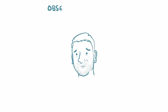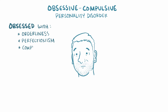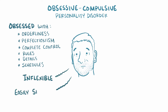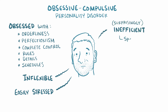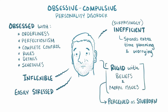Next is obsessive-compulsive personality disorder, where individuals are obsessed with orderliness, perfectionism, and having complete control, as well as rules, details, and schedules. While this might sound like a great set of attributes, people with this disorder are often inflexible and easily stressed, and surprisingly inefficient because they spend so much extra time planning and worrying about tasks rather than simply doing them. They also tend to be very rigid when it comes to beliefs and moral issues, which leads them to be perceived as very stubborn.